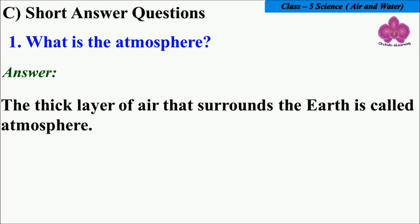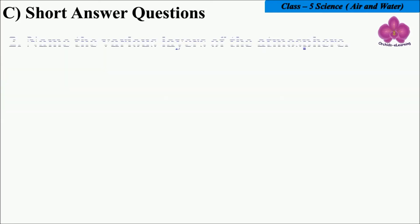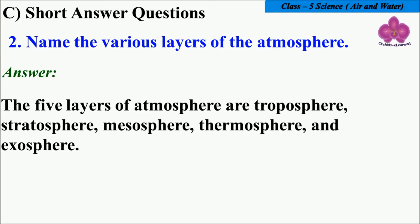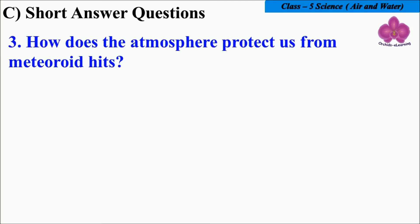And the next is questions and answers. First question: what is the atmosphere? The thick layer of air that surrounds the earth is called atmosphere. Question number two: name the various layers of the atmosphere. The five layers of atmosphere are Troposphere, Stratosphere, Mesosphere, Thermosphere, and Exosphere.